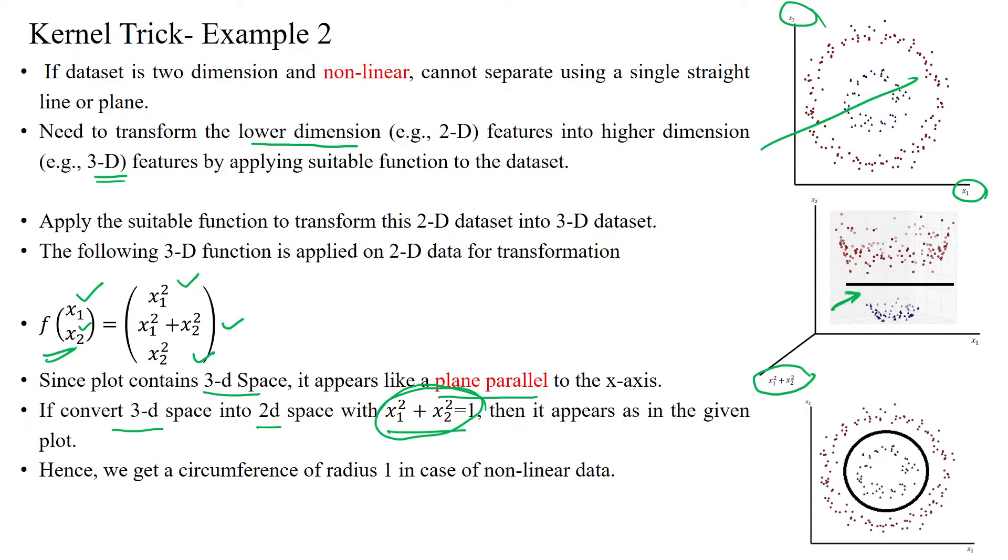When we are converting this, this is looking like a straight line. But here our data set is 3D data set. We converted transformed from 2D into 3D.